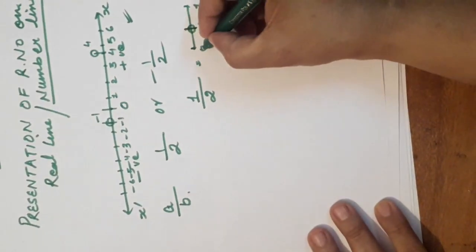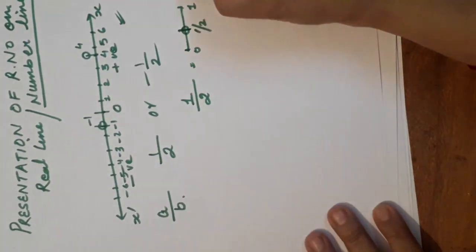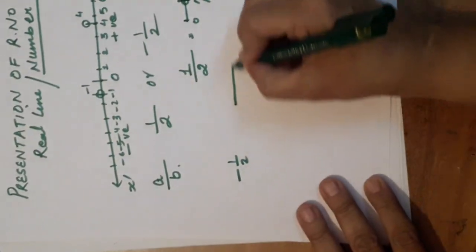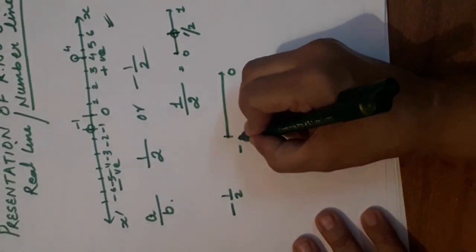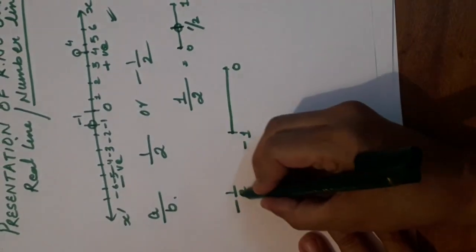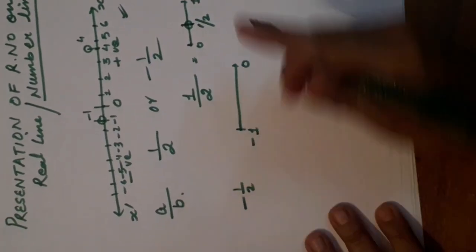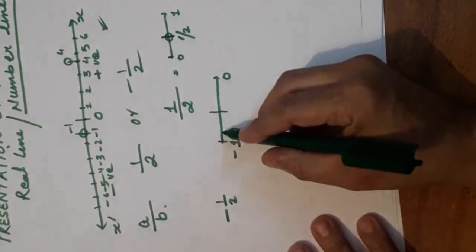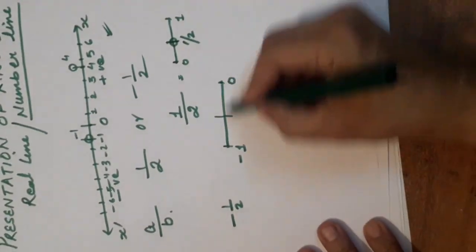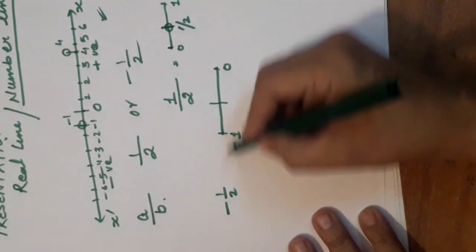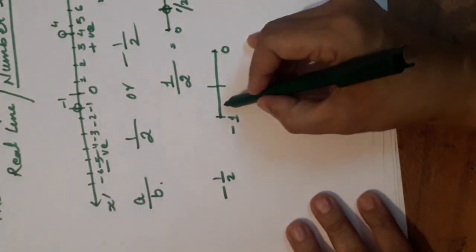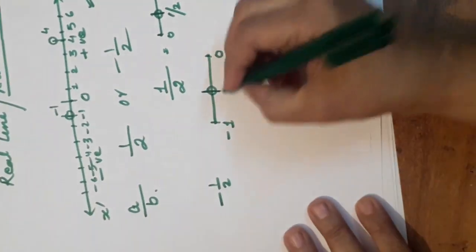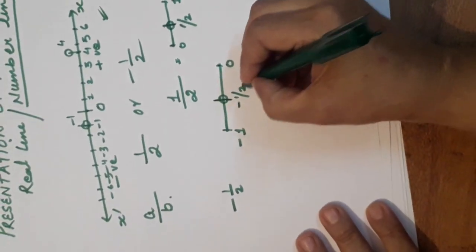I have gone from 0 to the positive side. Because it is positive number. But when I have to represent minus 1 by 2, then 0 will be here. And minus 1 will be here. Again I have to represent minus 1 by 2. Means I have to divide 0 to minus 1 in two equal parts. This is the first part and this one is the other part. I will start from here. I have to highlight 1 out of 2. Means out of these two parts I have to highlight first one. Only one partition is there. That means this is minus 1 by 2.